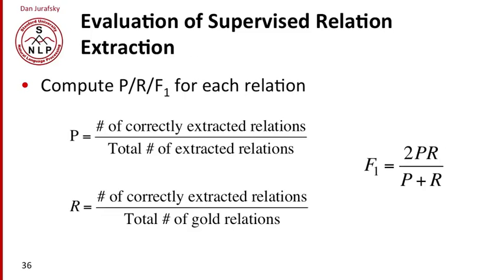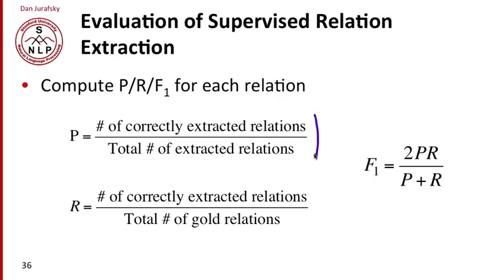Like other kinds of classification, supervised relation extraction is evaluated with precision, recall, and F1. Precision is the number of correctly extracted relations over the total number of relations extracted. Recall is the number of correctly extracted relations over the total number of true gold relations. We need a hand-labeled test set to compute precision and recall. F1 is 2PR over P plus R.